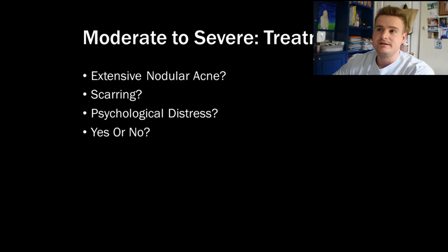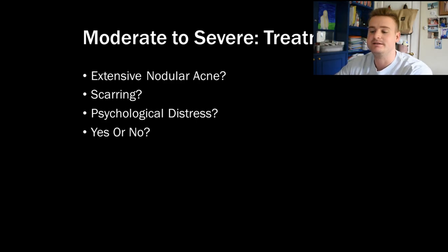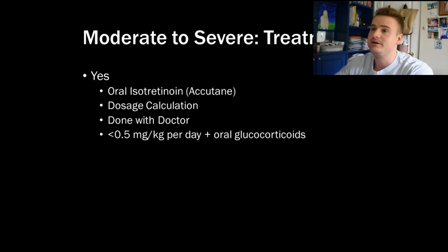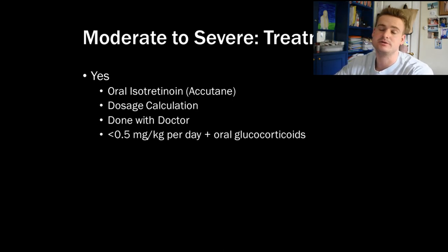For moderate-to-severe acne there are two separate ways of treating it. You have to ask yourself three questions: first, is there extensive nodular acne covering a lot of area? Is there scarring or psychological distress? If you answer yes to any of the three, you go straight on to roaccutane, or oral isotretinoin. There's a dosage calculation that should be done with a doctor because it is quite toxic — essentially started at 0.5 mg/kg/day — and then you add an oral glucocorticoid. That is the most recent suggestion for severe acne.